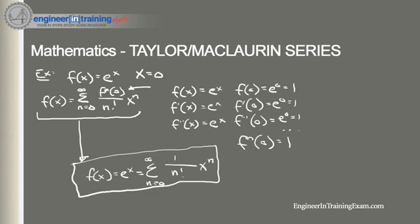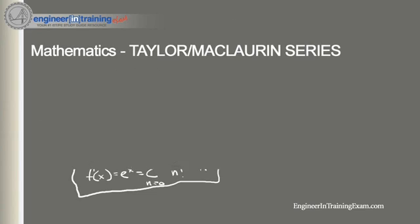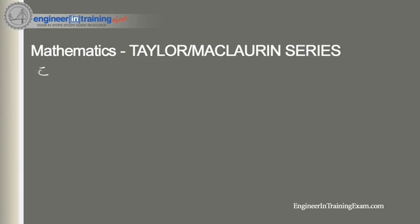Now let's take a look at a function that isn't about x equals 0. Let's find the Taylor series of f(x) equals e^(negative x) about x equals negative 4. We need to find the general formula for f^(n)(negative 4) — that's our key goal here.